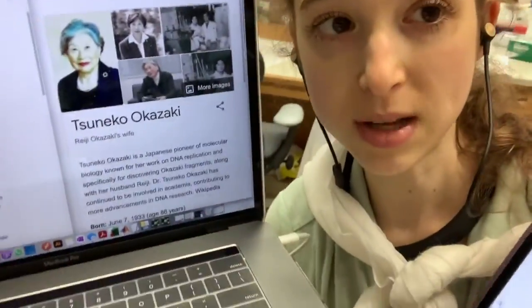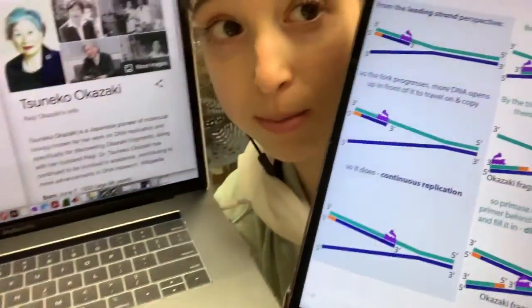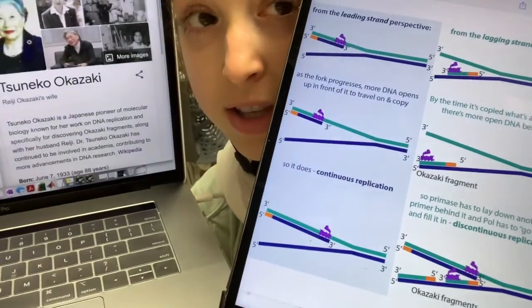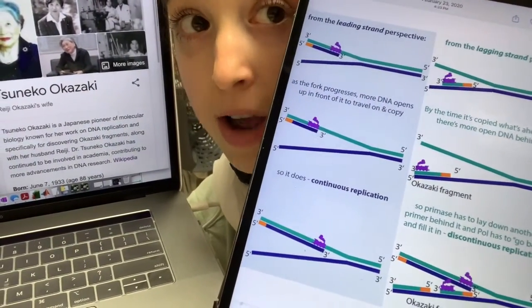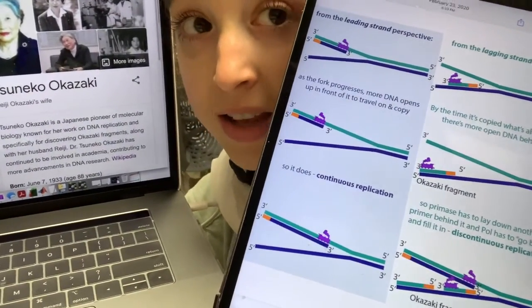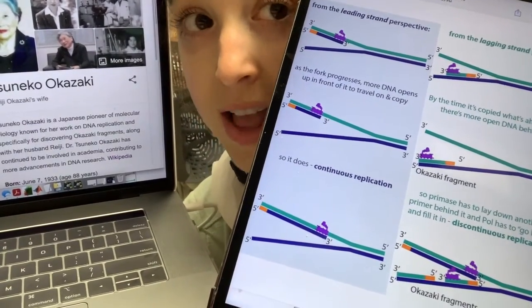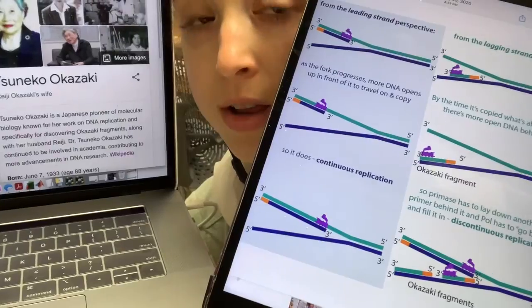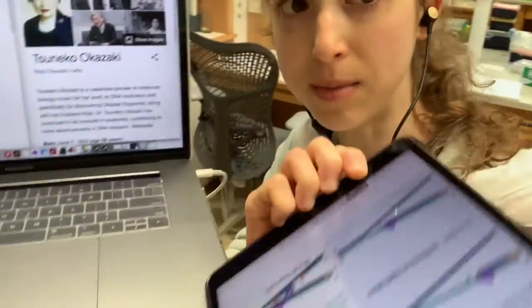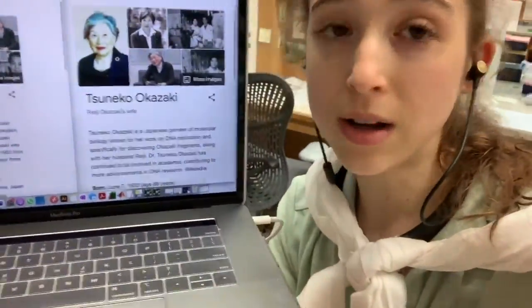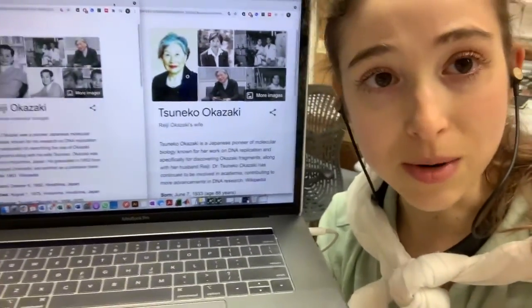So basically there's this puzzle that DNA has two strands that are, they can only get, each strand can only get copied in one direction, and the strands are in opposite directions. So one of the strands, called the lagging strand, has to be made in these short pieces called the Okazaki fragments. Well, we know that because of their work. Their work, not just his work, their work.